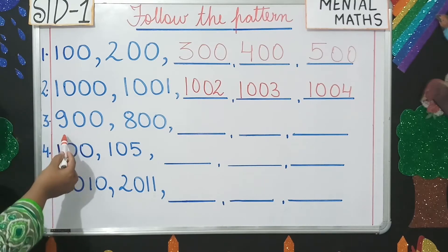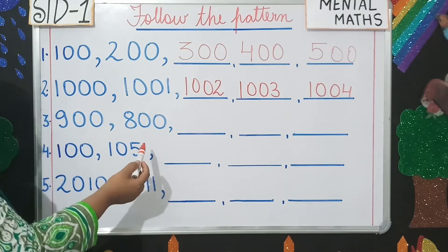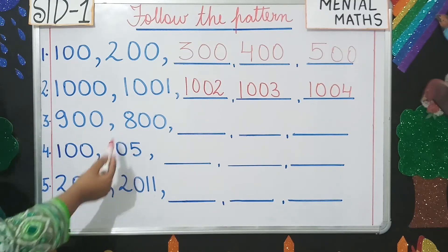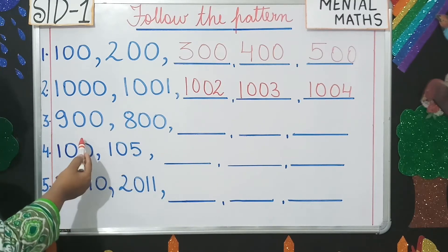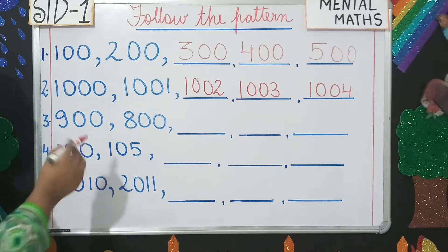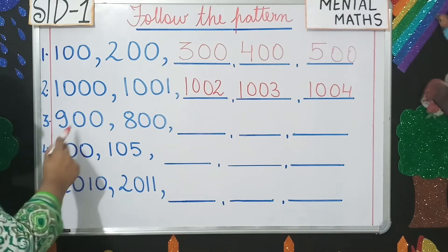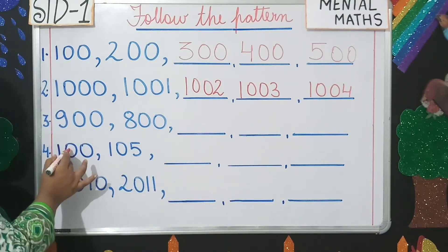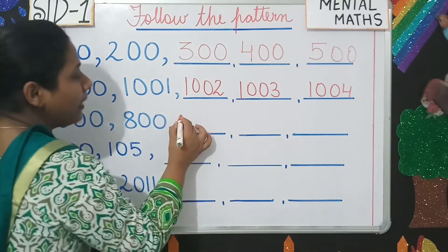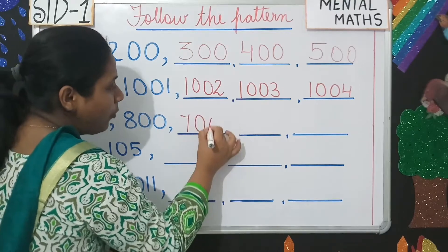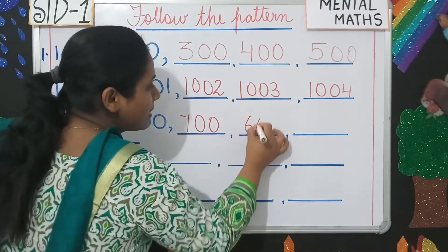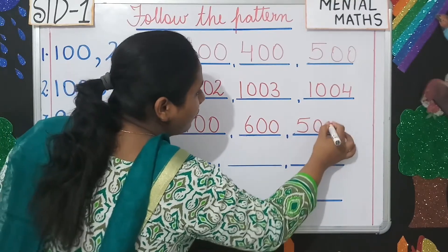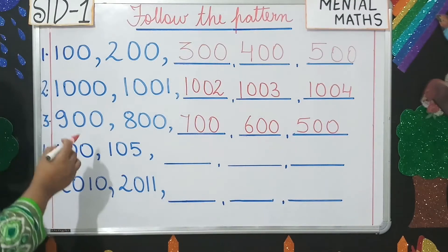Number three: 900, 800. What can you find here, students? There is a difference of 100, but it is backward counting. After 900 it is 800, so you have to move backward: 900, 800, then 700, 600, and 500. Is this clear?